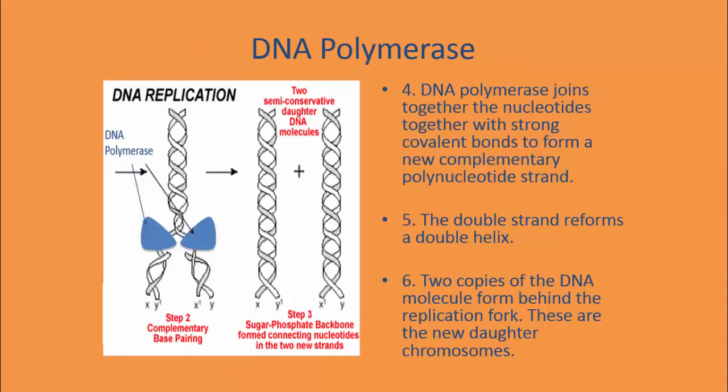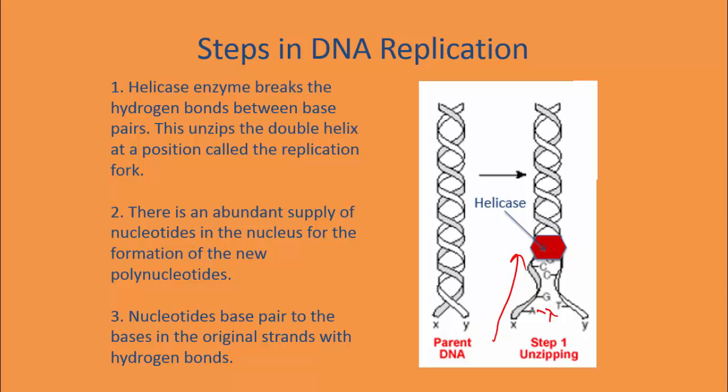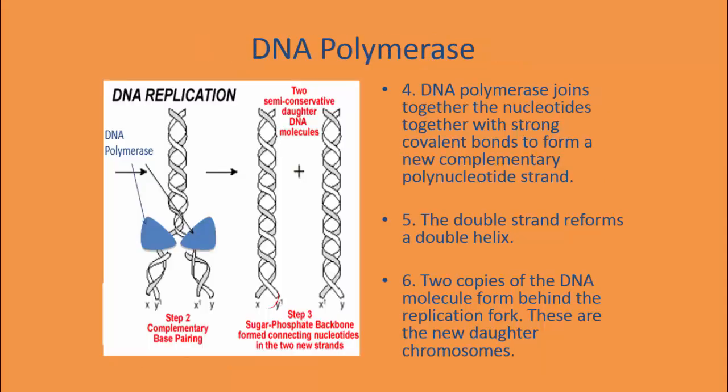Step four is the official joining by DNA polymerase, which bonds the nucleotides together with strong covalent bonds to form a new complementary DNA strand. Step five: the double strand reforms into the helix. Step six is the final result — two copies of the DNA molecule formed behind the replication fork. You can also condense this into three steps: unzipping, complementary base pairing, and formation of the sugar phosphate backbone connecting nucleotides into two new strands.